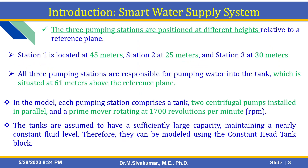Here is a small introduction about smart water supply systems. Three pumping stations are positioned at different heights relative to a reference plane — station 1 at 45 meters, station 2 at 25 meters, and station 3 at 30 meters. All three stations pump water into a tank situated at 61 meters above the reference plane. Each pumping station comprises a tank and two centrifugal pumps installed in parallel, with a prime mover rotating at 1700 RPM.